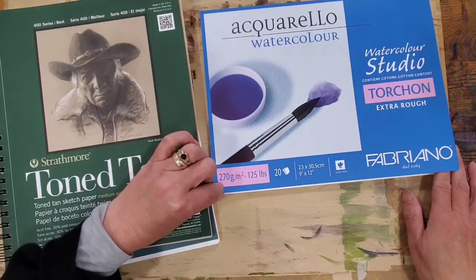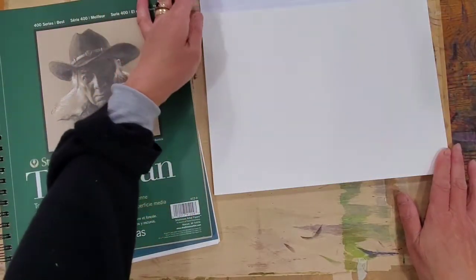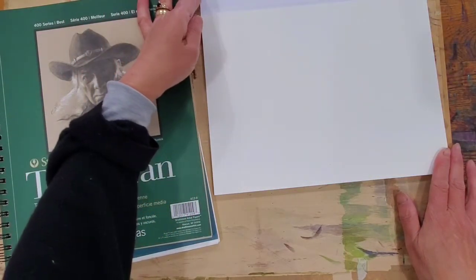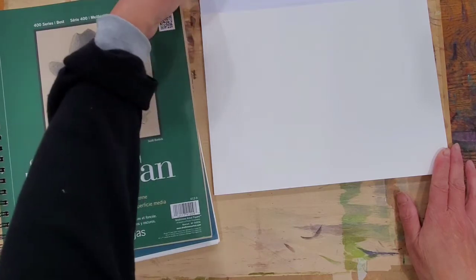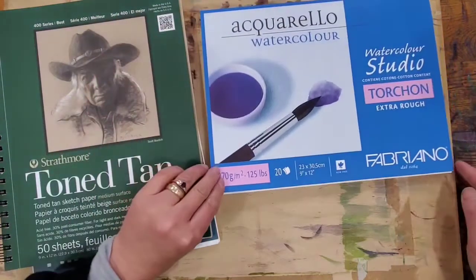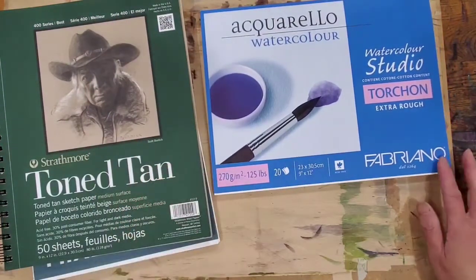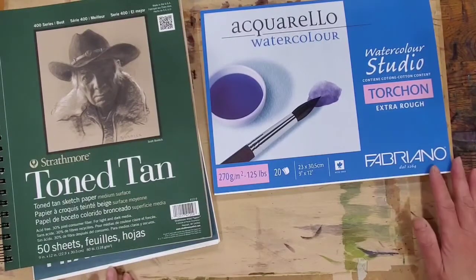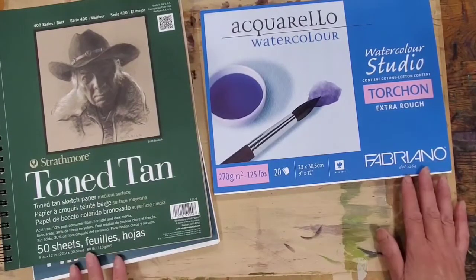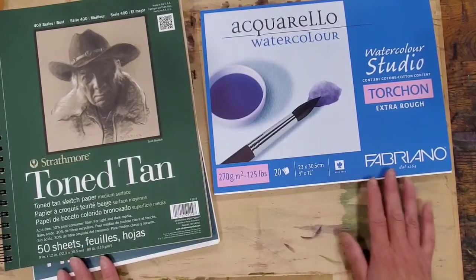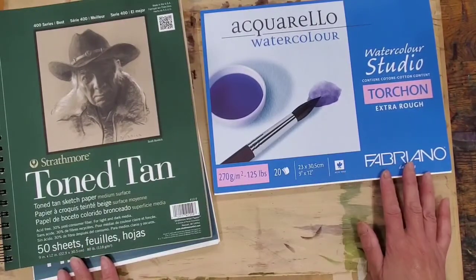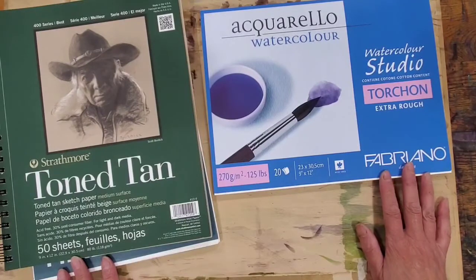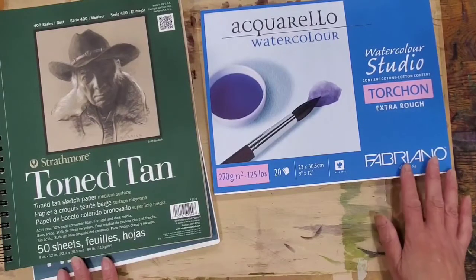Any kind, lighter version like 90 pounds or this is 125 pounds, from hot press to rough surface, it's just your needs. Then of course, put them into the same size or cut them into the same size. These happen to be exactly the same size of 9 by 12, which is the size I prefer for any of my travel sketchbooks.